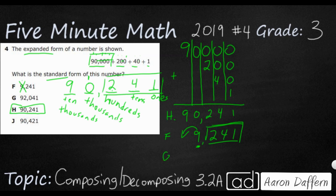G is 92,041. So at least the 9's in the correct spot. But as you can tell, my issue here is going to be this 2. This 2 is in the 1,000 spot. But really, it belongs in the 100 spot because if this 2 is in the 1,000 spot, this would be 2,000. But it's actually 200.